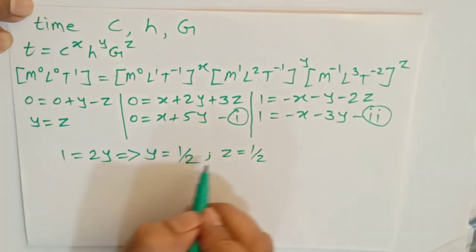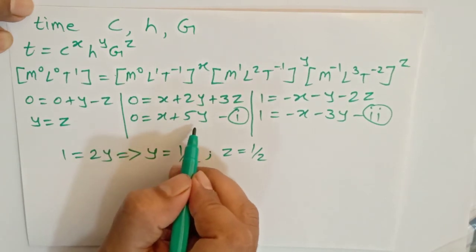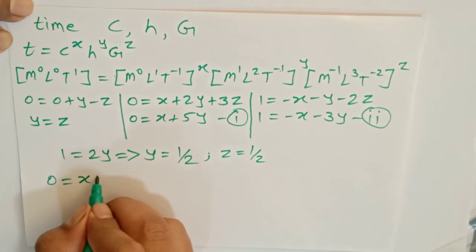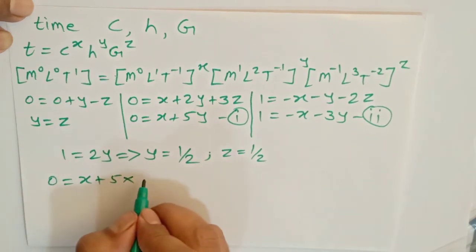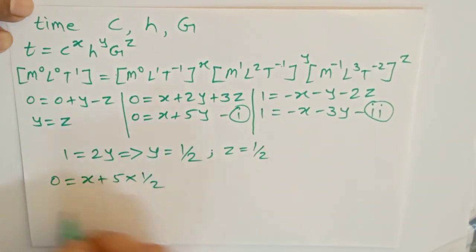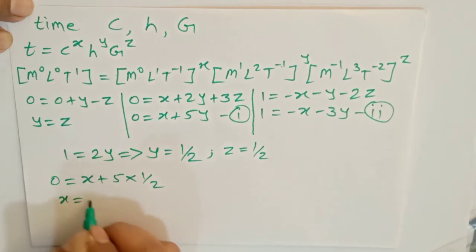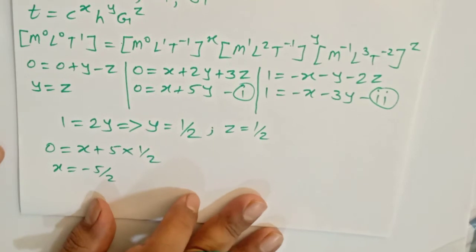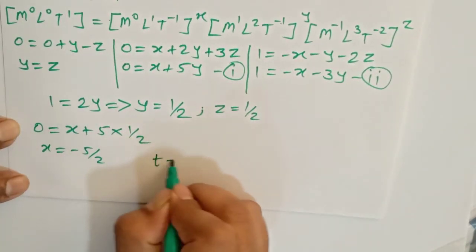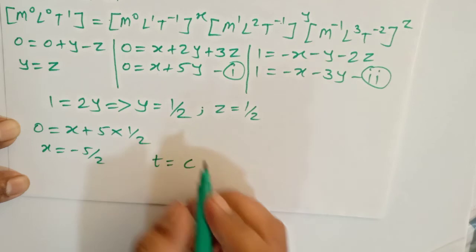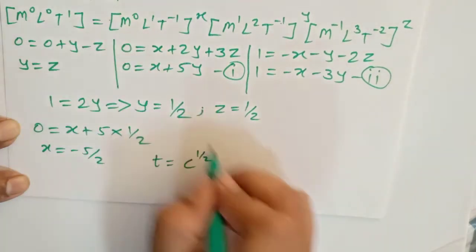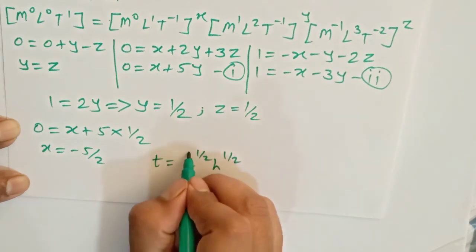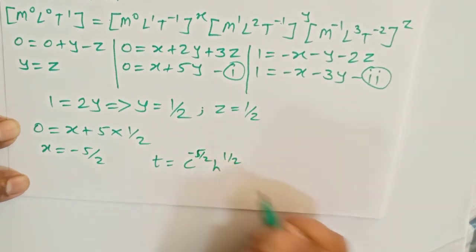Now substitute the y value into equation 1 to find x. 0 equals x plus 5 times one-half, so x is equal to minus 5 by 2. So to express t, we write t equals c to the power x—sorry, x power is minus 5 by 2—h to the power half.